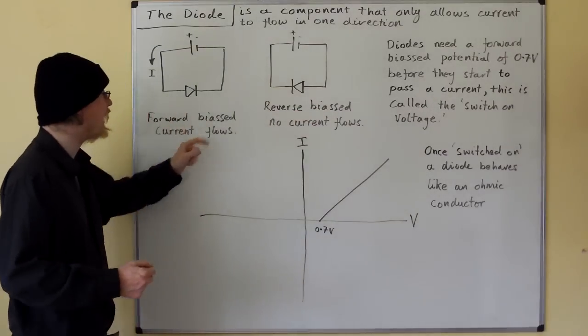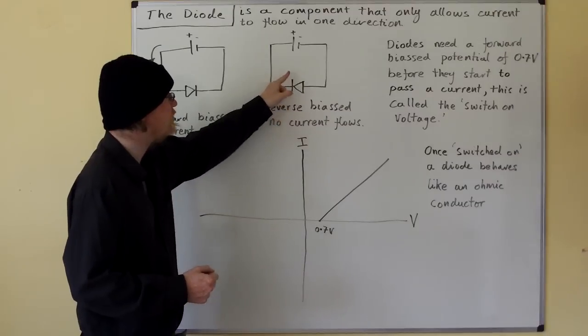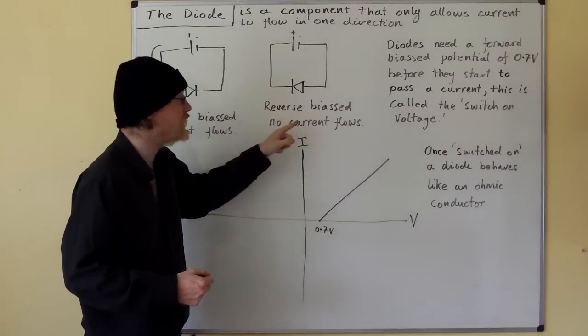So when it's forward biased, it allows a current to flow. When it's reverse biased, the other way round, with this bar facing the positive, then no current flows.